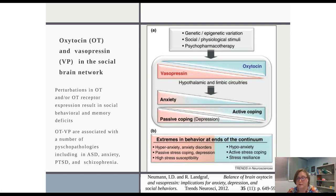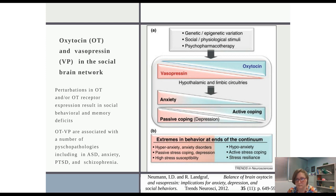Oxytocin and vasopressin receptors are expressed in the social brain network, and perturbations in oxytocin or its receptor result in social behavioral and memory deficits. They are associated with a number of psychopathologies including autism spectrum disorder, anxiety, post-traumatic stress disorder, and schizophrenia. A number of genetic, epigenetic, social, and physiological stimuli affect receptor expression. Unfortunately, because oxytocin and vasopressin do not easily cross the blood-brain barrier, have poor bioavailability, and very short half-lives, currently intranasal oxytocin application is the only option for treatment in humans and higher vertebrates.